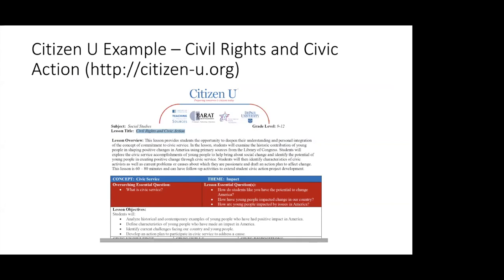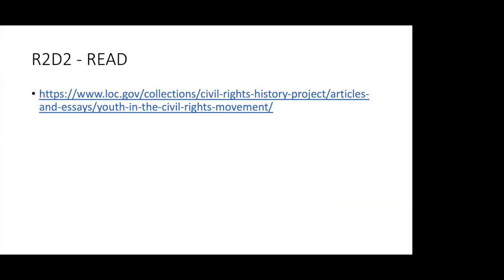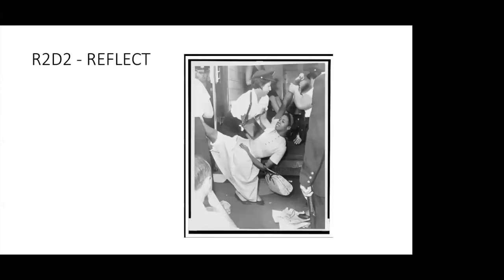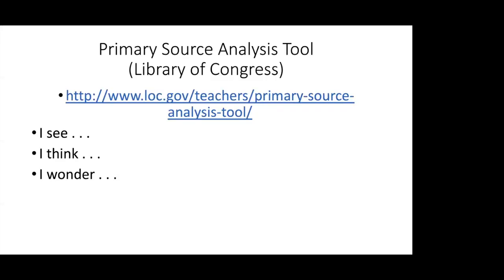I want to show you. This is a sample lesson from Citizen U on civil rights and civic action. This lesson goes through all of the elements of R2D2. The read takes you to the Library of Congress, and in that Library of Congress, there's a collection for youth in the civil rights movement, which is a short essay for students to read. There's also pictures associated. There's this picture that allows students to reflect. If you go to that Citizen U lesson, you have the R2D2 model all built together. So the students look at this picture when they're talking about youth and civil rights. They then use the primary source analysis tool, which you can find with that URL. And they look at the picture and complete, I see, I think, I wonder.